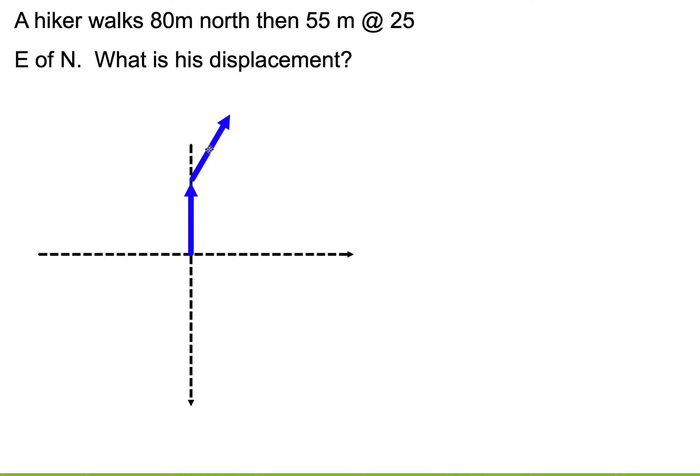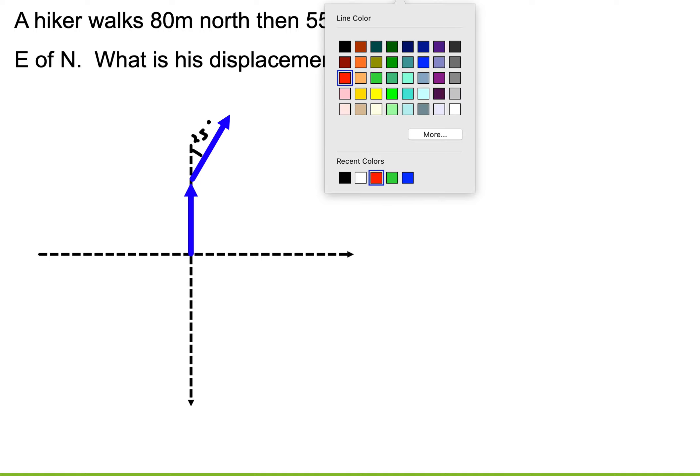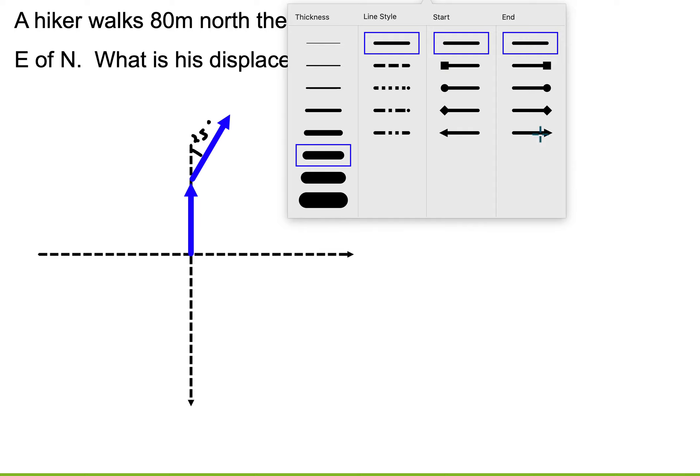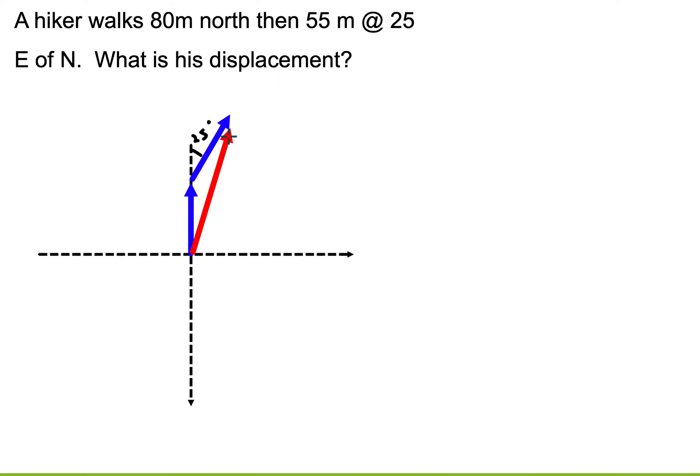So those are my two vectors. Now, how did I know to put it here? Well, 25 degrees east of north means that I was going north, and I had to turn 25 degrees east of that. So now, when I go to find my resultant, I have a slight problem here. If I want to find this mathematically, that's going to be really hard math, because this is not a right triangle. So I can't use SOHCAHTOA.